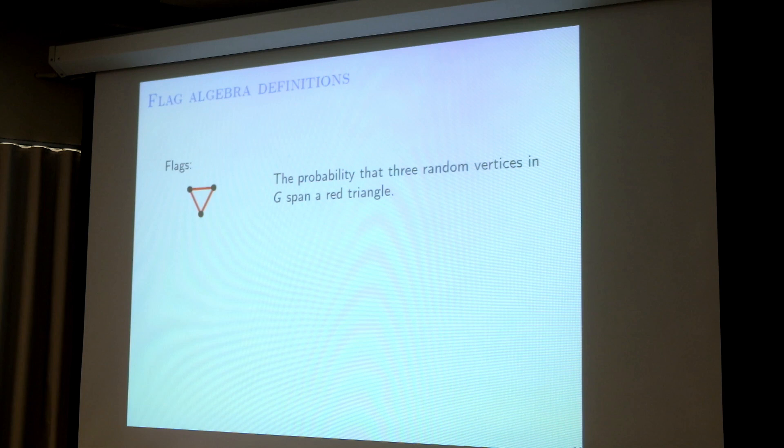I will show something: whenever I have a graph, I will not only see it as a graph, but also view it as a density — meaning the probability that three random vertices in G span a red triangle. Here I just assume G is two-colored, red and blue. You can also think of G as just a graph where red means edges and blue means non-edges. So basically this is just the triangle density.